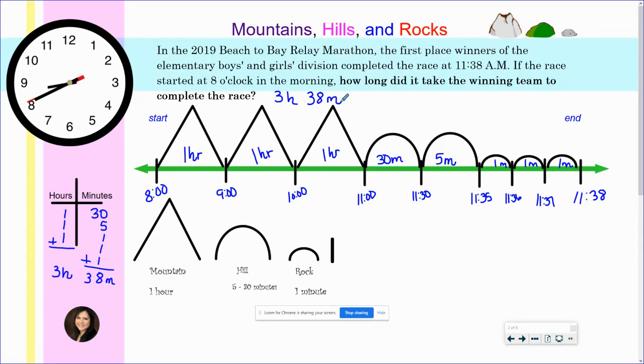So this is the strategy for elapsed time using the mountains, hills and rocks. Thank you.